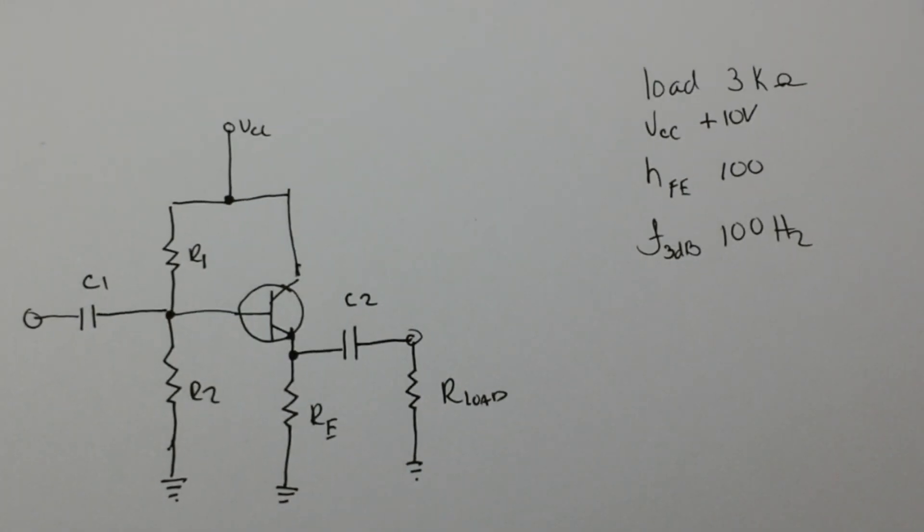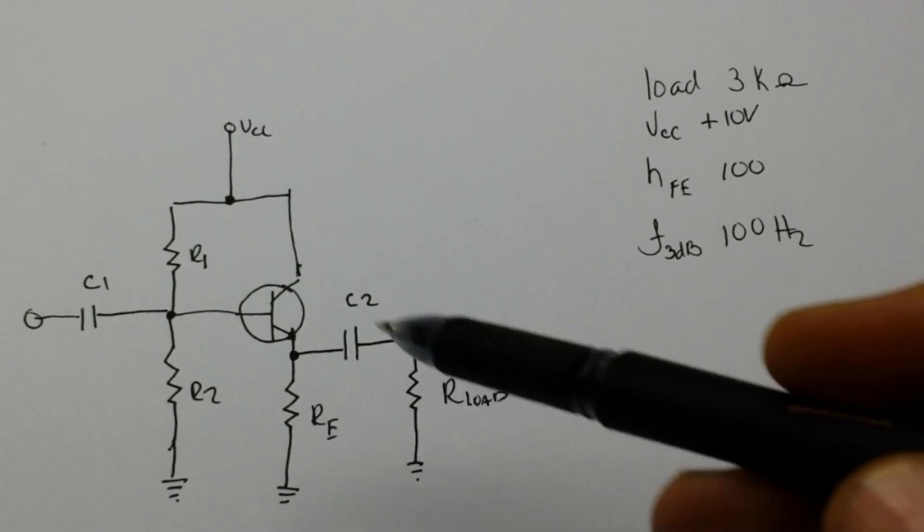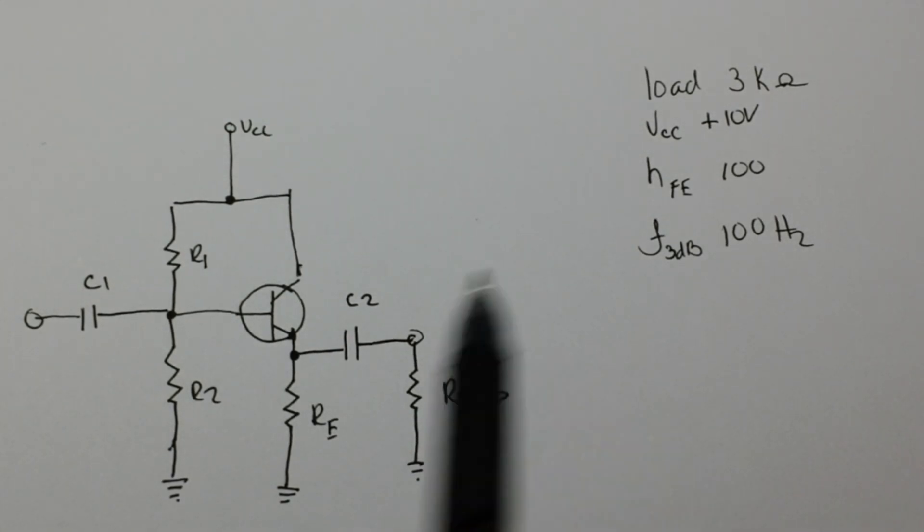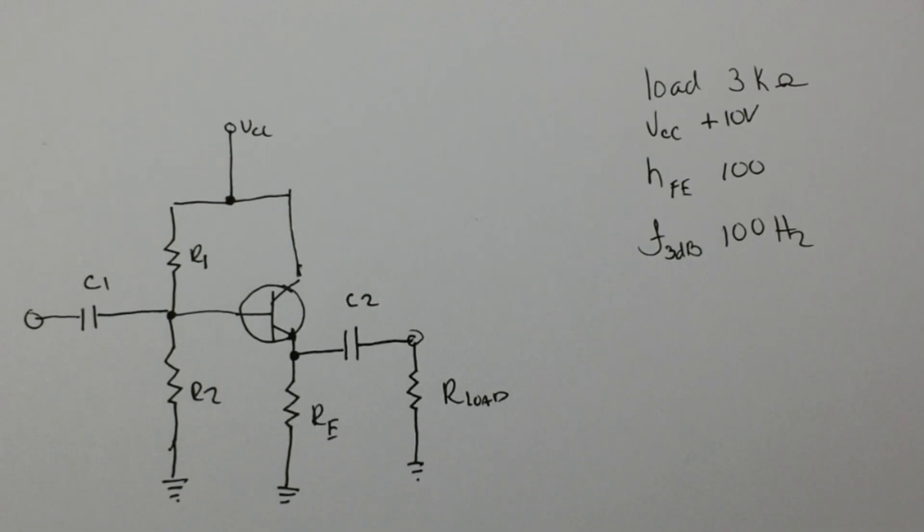So what we have here is basically your simple common collector amplifier. Small signal goes in here, larger signal comes out here.